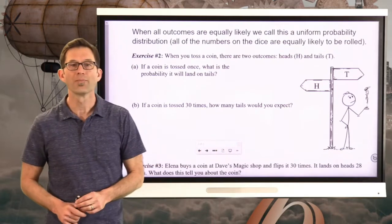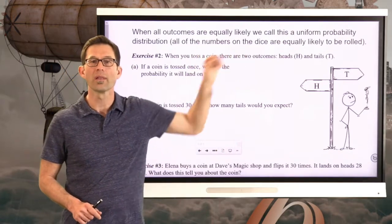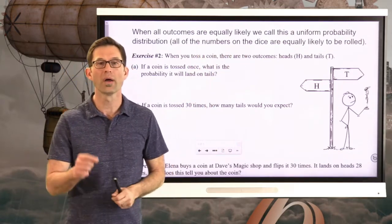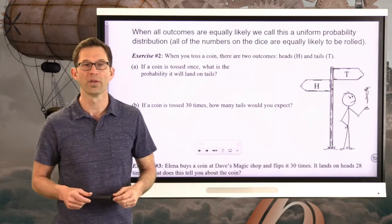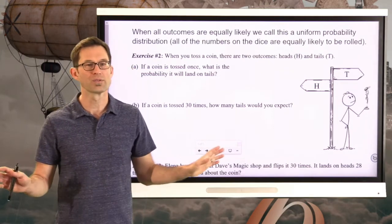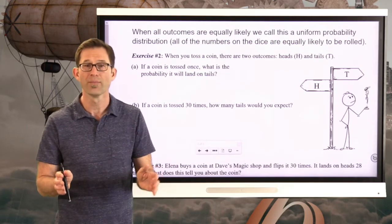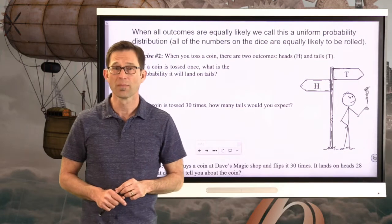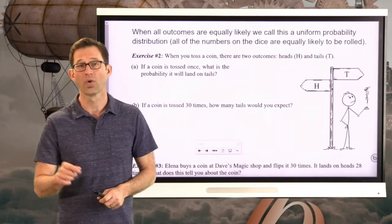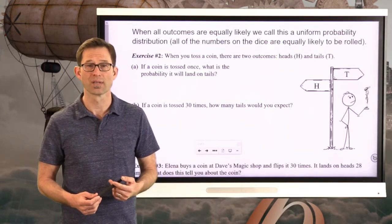Let's keep going. Now, when all outcomes are equally likely, we call this a uniform distribution, a uniform probability distribution. All the numbers on the die are equally likely to be rolled. A great example that comes up a lot in probability is tossing a coin. So let's take a look at that in exercise number 2.